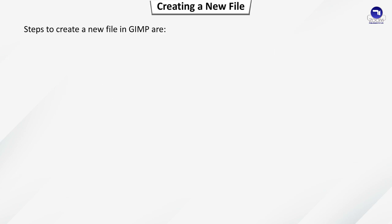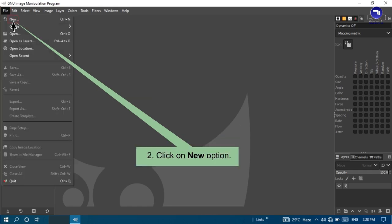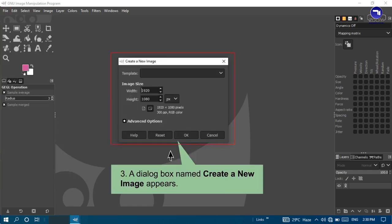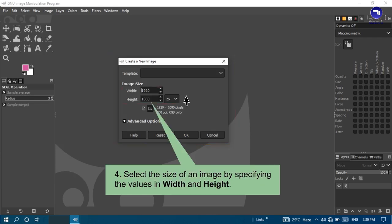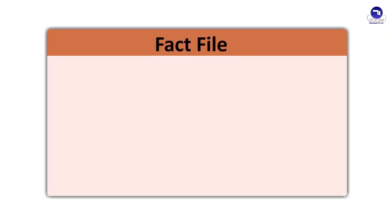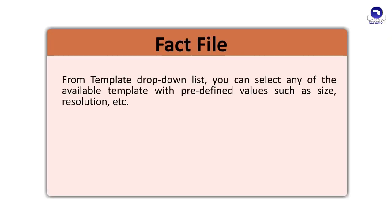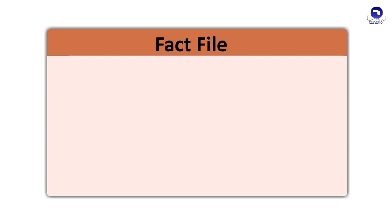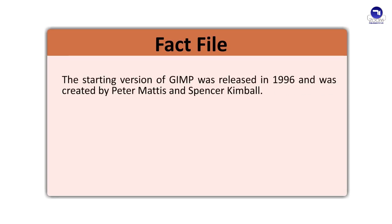Creating a new file: Steps to create a new file in GIMP are — click on the File menu, click on New option, a dialog box named Create a New Image appears, select the size of the image by specifying values in width and height, and click the OK button. From the Template drop-down list you can select any available template with predefined values such as size, resolution, etc.